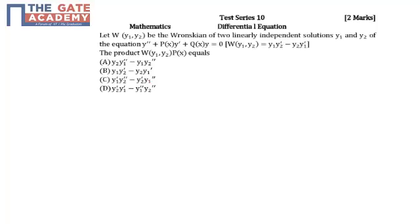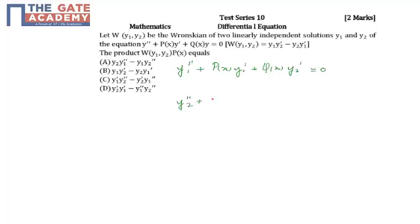Since the solutions are y1 and y2, we can rewrite the equation as: y1'' + p(x)·y1' + q(x)·y1 = 0. And for the other solution, we have: y2'' + p(x)·y2' + q(x)·y2 = 0.